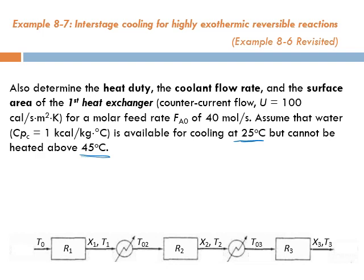Let's do this one by one: find Q̇ first, then ṁ (mass flow rate of coolant), then the surface area A.